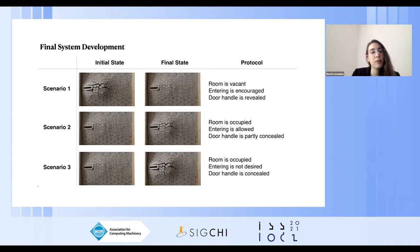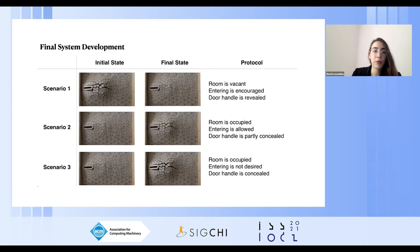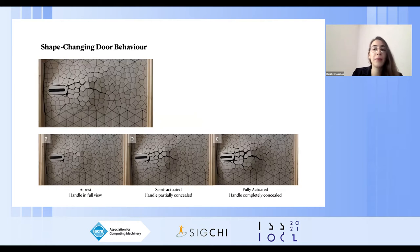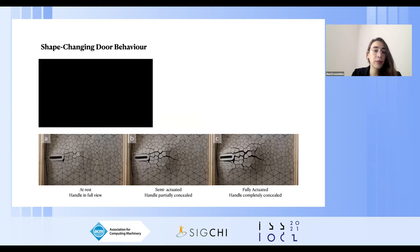Therefore, we decided that the final prototype would enact three scenarios of use. In the first scenario, the door panel invites people to enter. In the second, it permits entry when the room is occupied but still accessible. And in the third, it prohibits entry when the room is occupied. The scenarios were conveyed through kinetic movements replicating the dancer's movements, suggesting the door panel was demonstrating some sort of lifelike behavior. They were matched to cues where the door handle is in full view, partially concealed, and completely concealed.